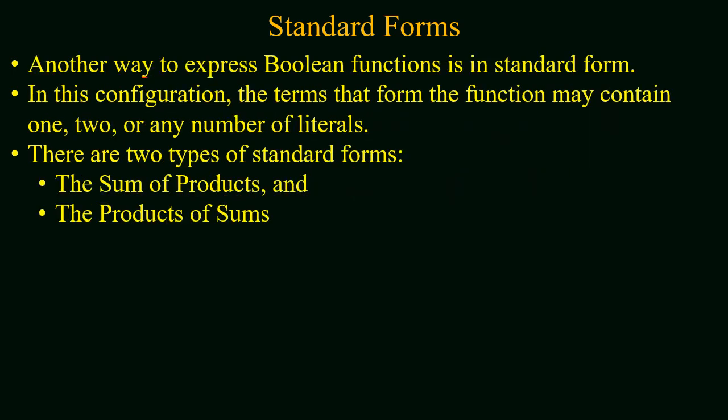Another way to express a Boolean equation is in standard form. In this configuration, the terms that form the function may contain one, two, or any number of literals. In canonical form it was obligatory that each minterm or maxterm must contain all variables, whereas in standard form there is no such restriction. We have two types of standard form: sum of products and product of sums.